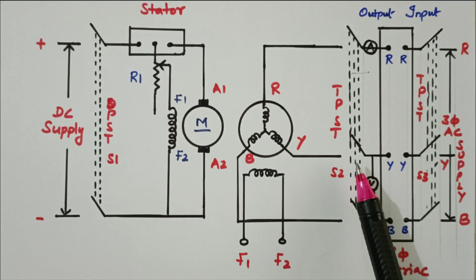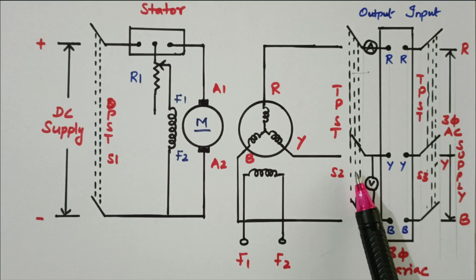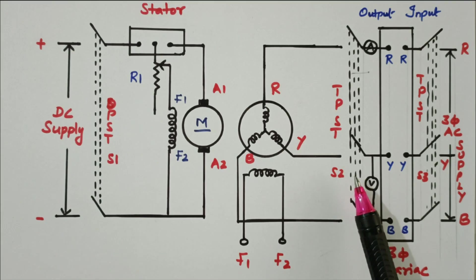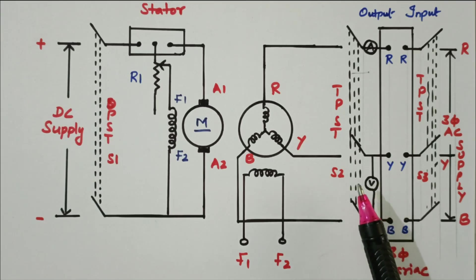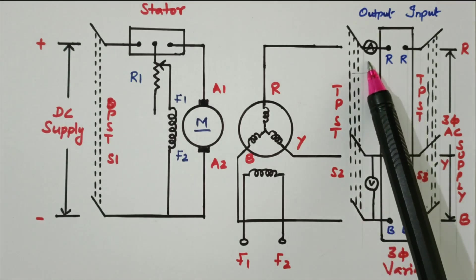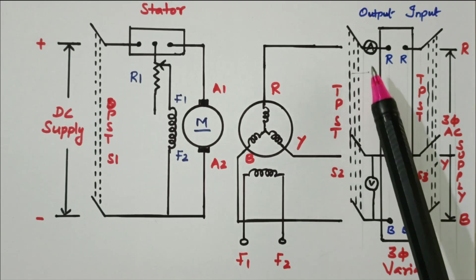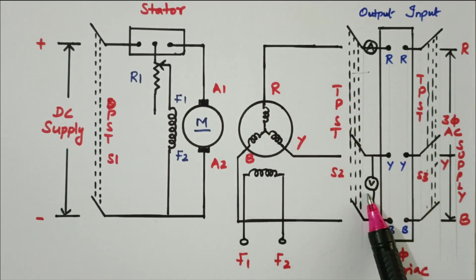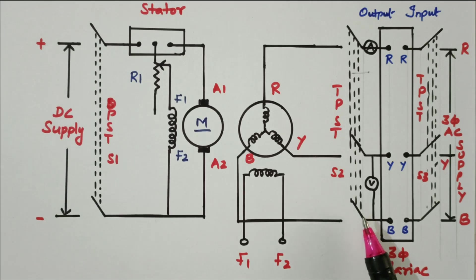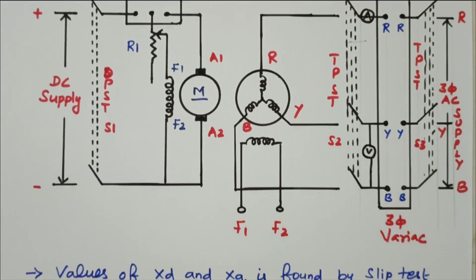At maximum voltage and minimum current we are able to find the Xd parameter. At minimum voltage and maximum current we are able to find the Xq parameter. An ammeter is available to measure the current through the armature, and a voltmeter is available to measure the voltage.